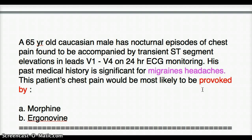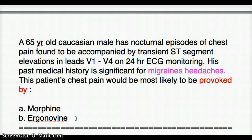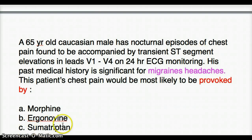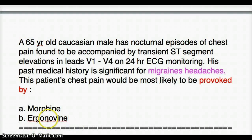The ST segment elevation in leads V1 to V4 can be caused by an MI or by Prinzmetal angina. The real question asks: this patient's chest pain would most likely be provoked by which drug? The options include morphine, Ergonovine, and hypothetically sumatriptan. If sumatriptan were an option, we'd choose it since it can cause ST elevation and is used for migraines, but in this question sumatriptan is not listed, leaving us with morphine or Ergonovine.